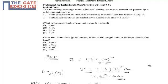The following readings were obtained during the measurement of power by a polar potentiometer. The voltage across 0.2 ohm standard resistance in series with the load is 1.52 at 35 degrees. The voltage across 200 ohm potential divider across the line is 1.43.